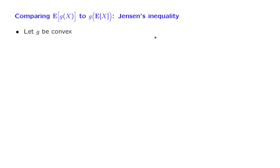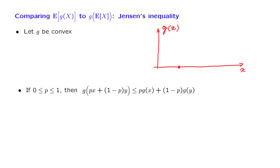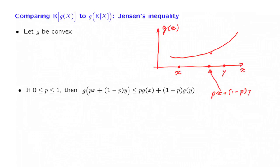So this is what Jensen's inequality says, but for a more general distribution for the random variable x. Let us now step back and define more precisely what it means for a function to be convex. The most general definition is the following: if I take any two points x and y, and I take some number p between 0 and 1, then the number px plus (1 minus p)y is a weighted average of x and y, so it's somewhere in the middle.